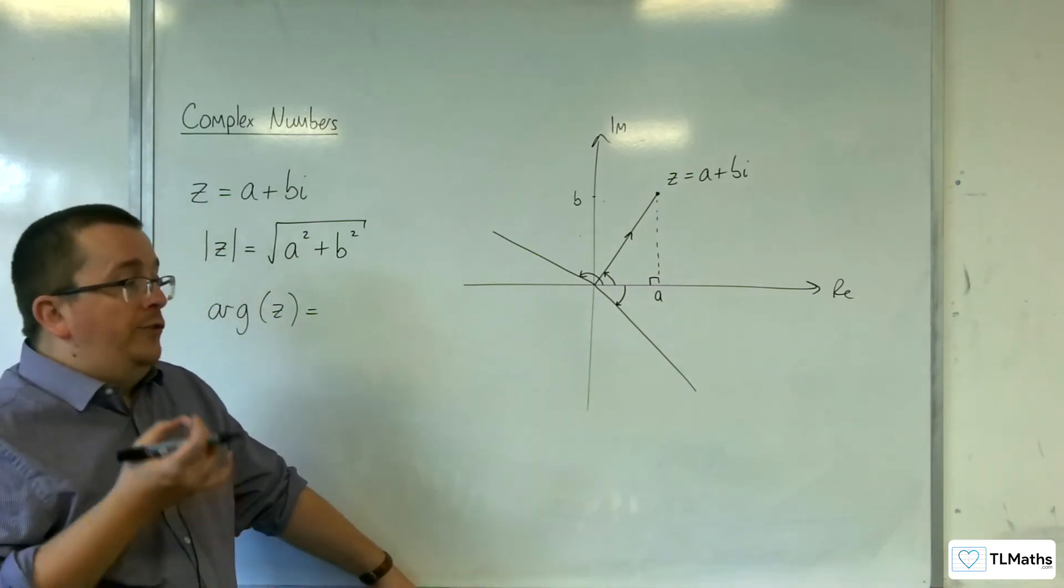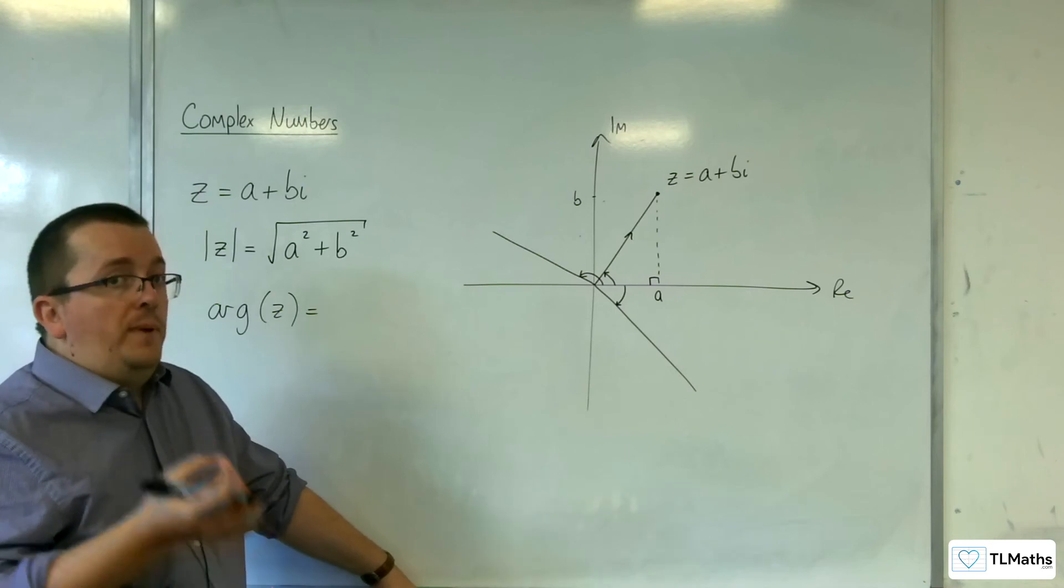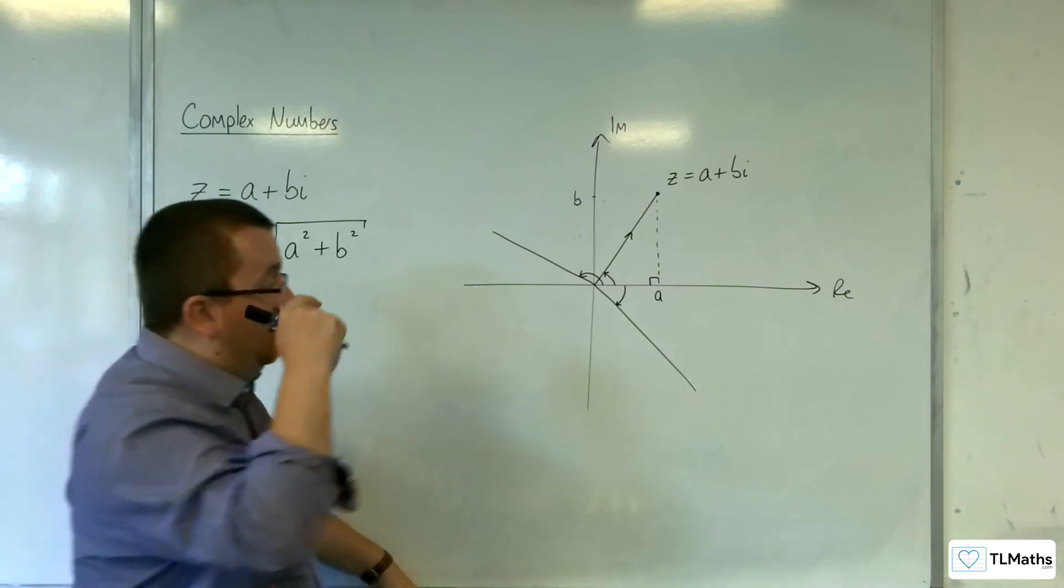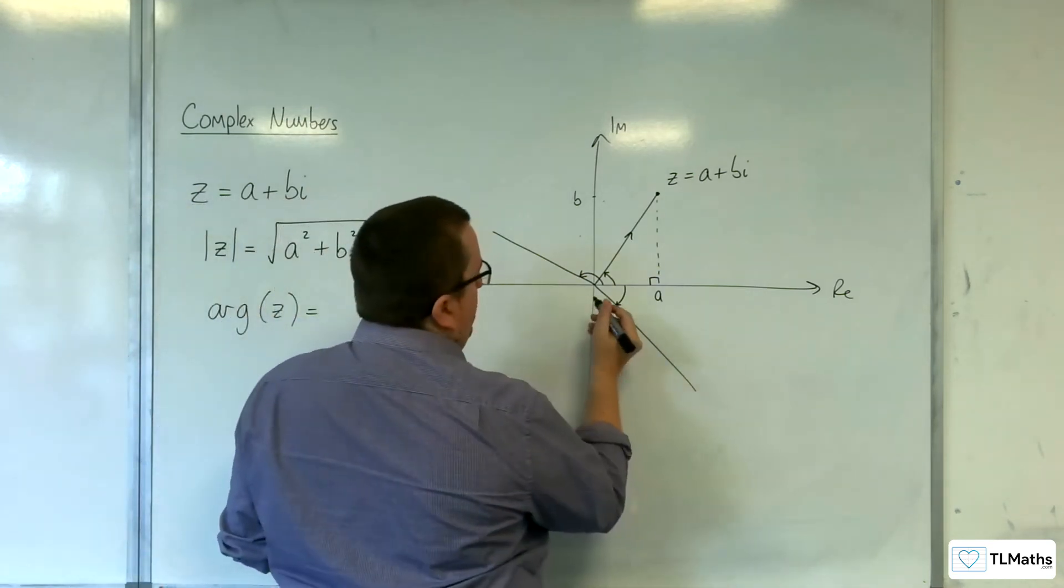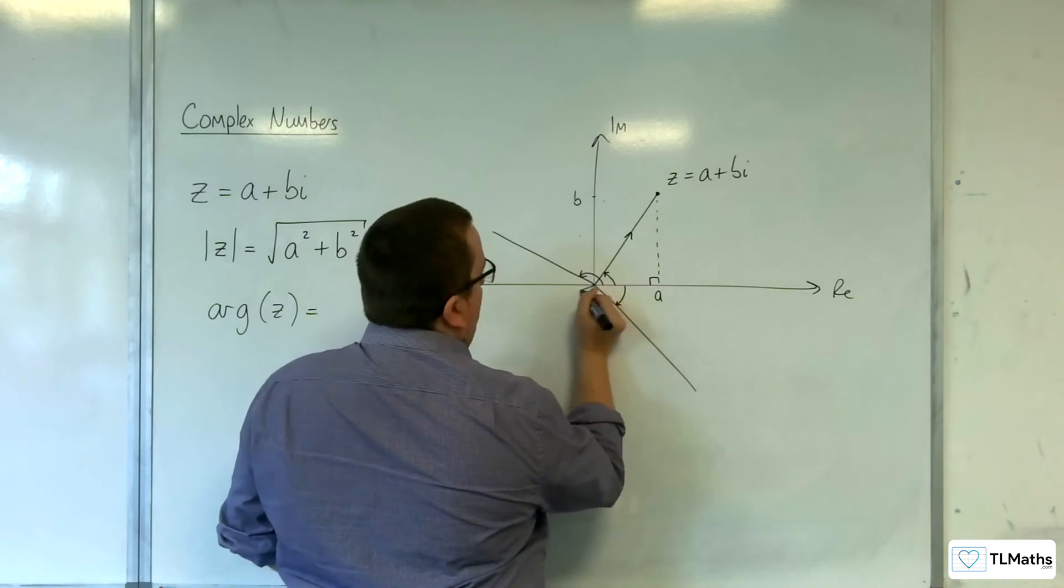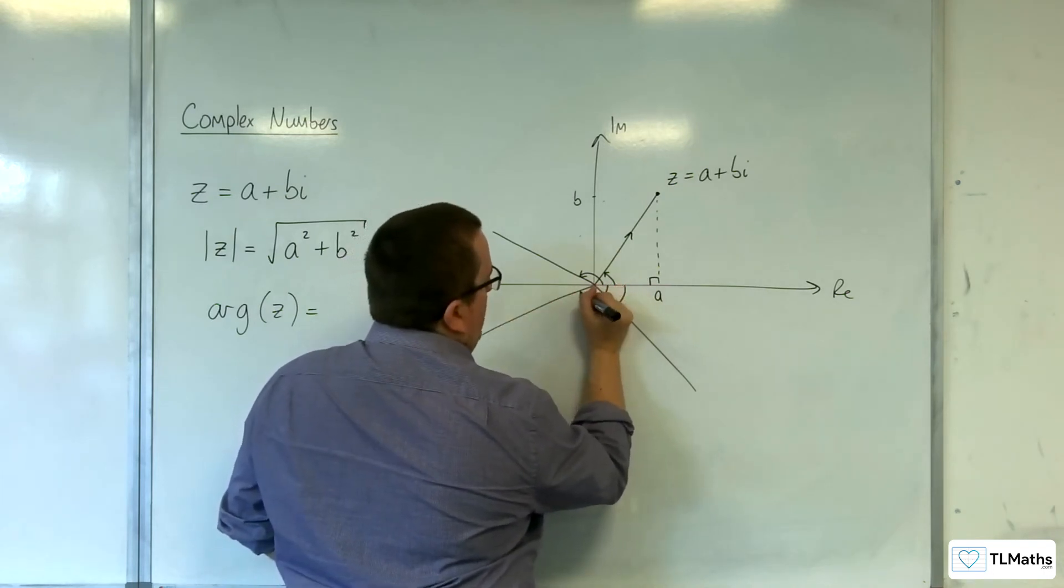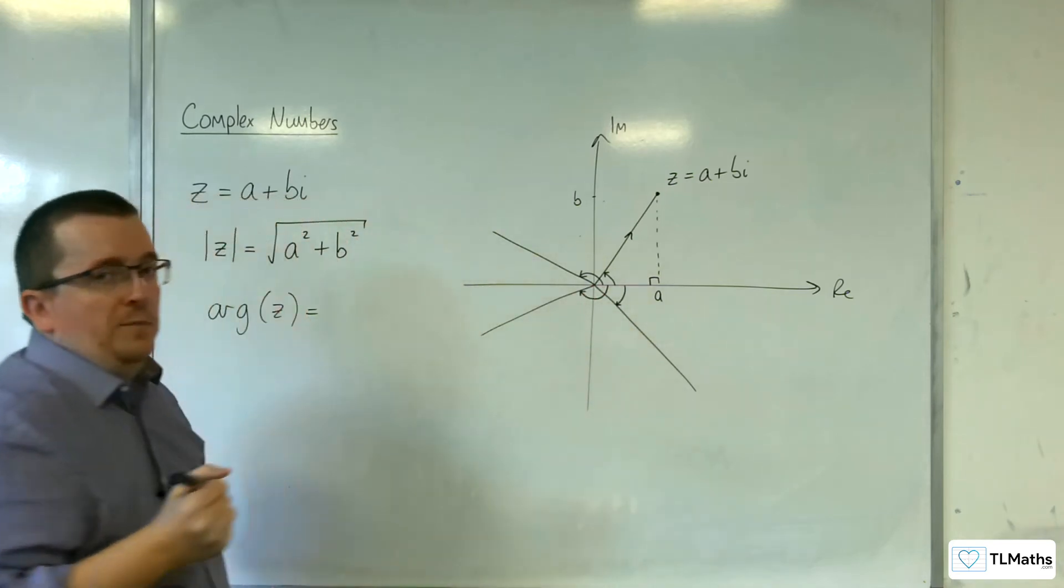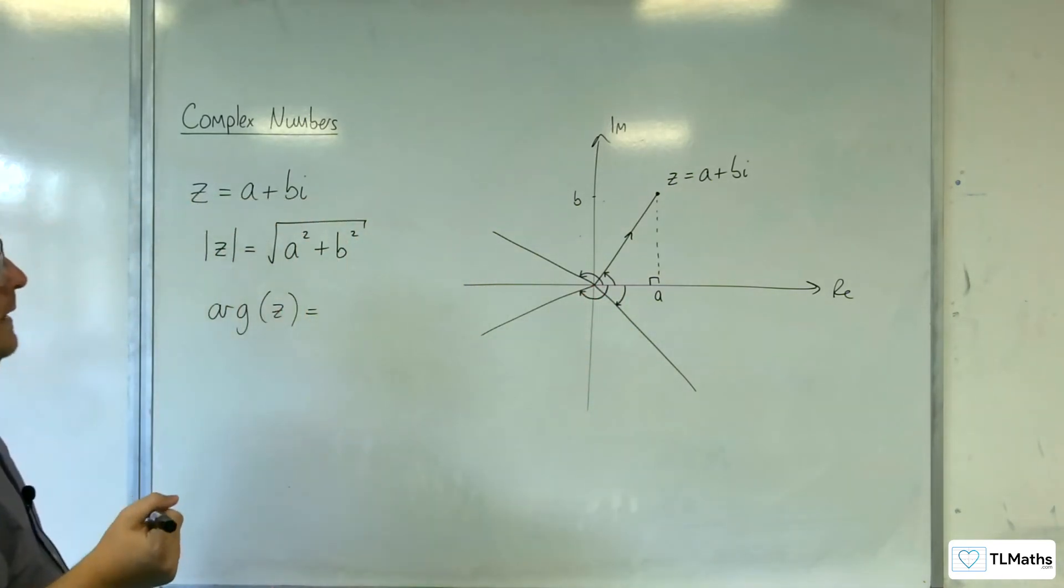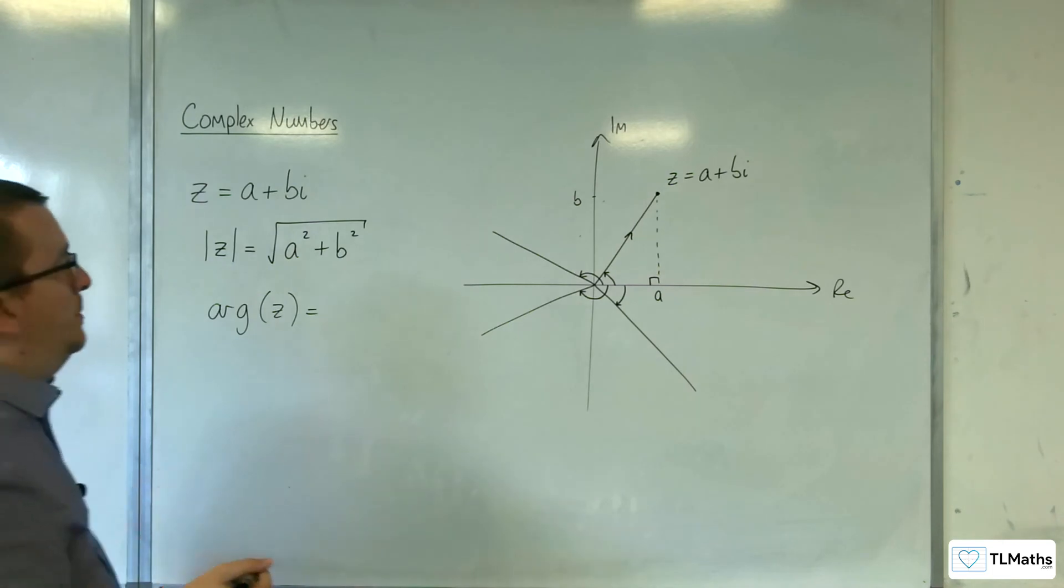The angles that we use are all going to be in radians, to be clear. That is the convention that is used. For example, if you had it over here, then the argument would be this angle here, and it would be taken to be negative. That is how we work out the argument.